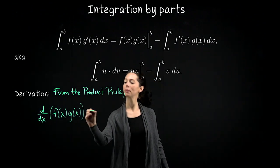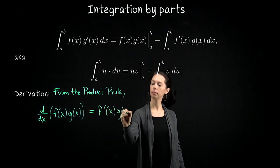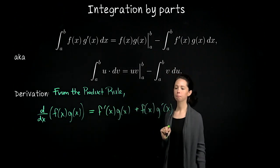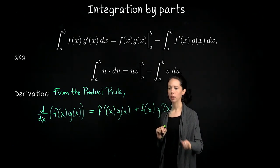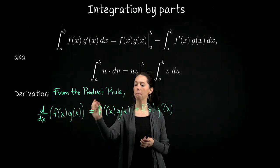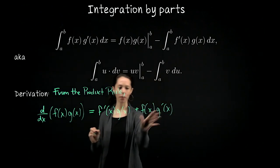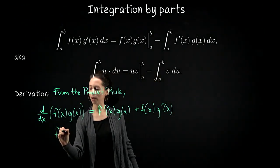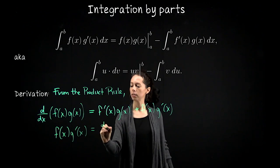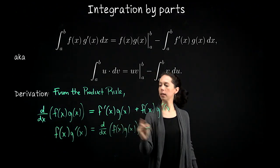Here's what I hope you got. From the product rule, the derivative of f times g is f prime times g plus f times g prime. Now I would like to move the middle term to the left, so I have the derivative of this product minus f prime g equals f times g prime. Flipping the sides, we have f times g prime equals the derivative of f times g minus f prime times g.